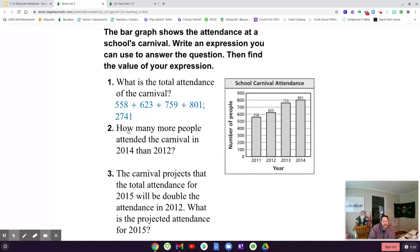Question 2. How many more people attended the carnival in 2014 than 2012? What expression would we use to solve that problem? Okay. So, we're going to subtract 801 minus 623. And what is the number of people that attended in 2014 over the 2012? It is 178.